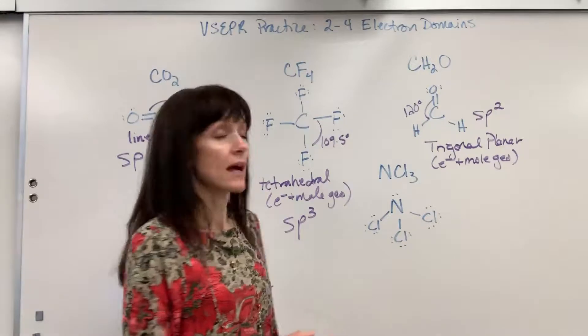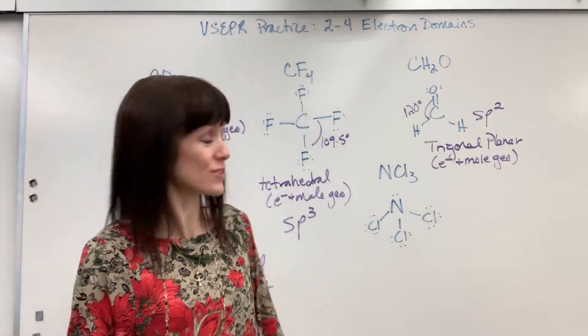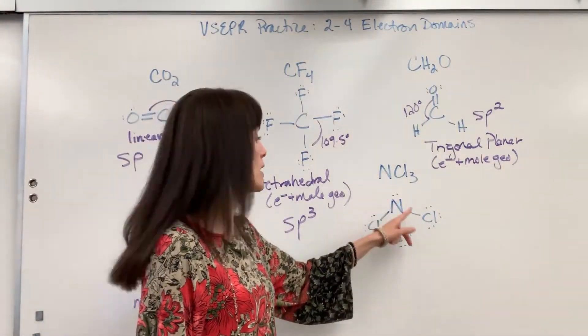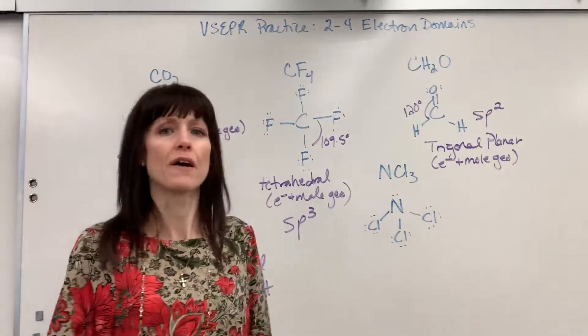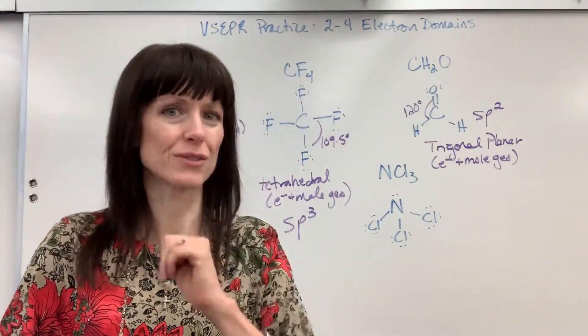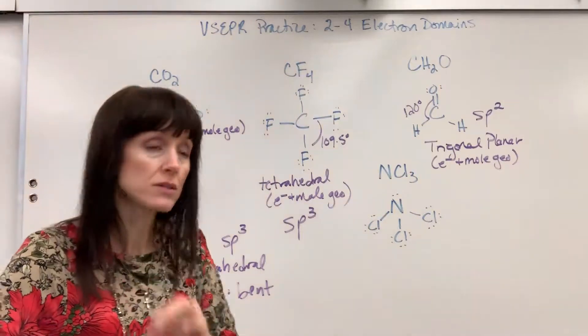Nitrogen trichloride. Let's count electron domains around that central atom, nitrogen. One, it's a lone pair. Two, three, four. So we've got three bonds and one lone pair. Four electron domains total.